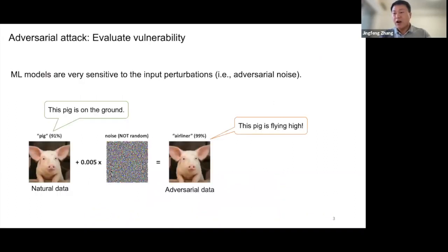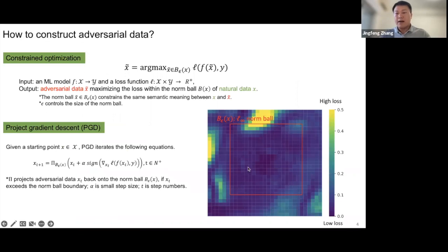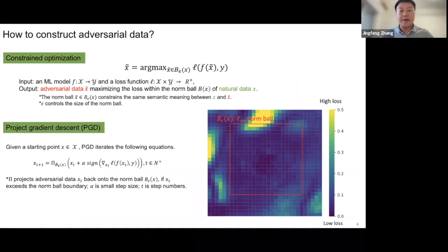Adversarial attack is a way of evaluating the vulnerability of machine learning models. Machine learning models are so vulnerable to input perturbation. For example, with only a small noise, the image of a pig will be wrongly recognized as an airliner. To construct adversarial data, we basically solve a constrained optimization problem given a machine learning model and its loss function. We output adversarial data maximizing the loss within a norm-ball constraint, where the norm-ball constraint preserves the same semantic meaning between natural data and adversarial data.